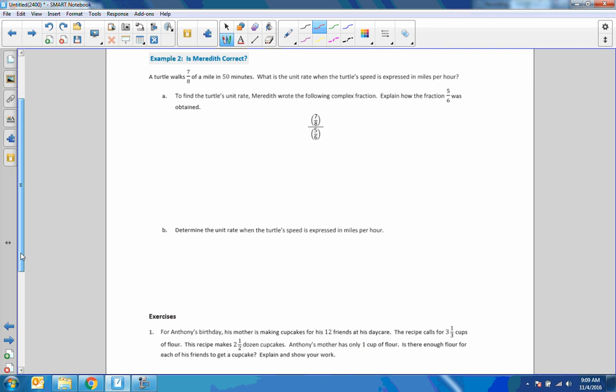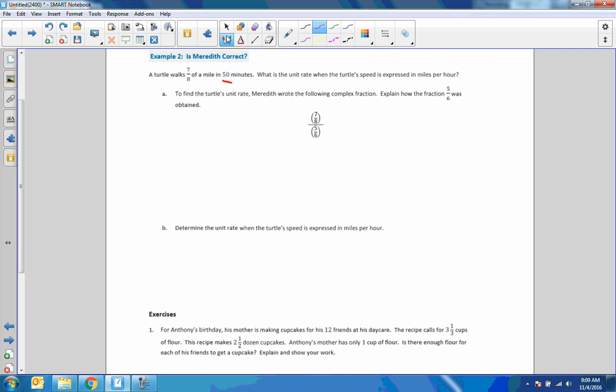Number two. A turtle walks 7 eighths of a mile in 50 minutes. What is the unit rate when the turtle's speed is expressed in miles per hour? We find the turtle's rate. Meredith wrote the following complex fraction. Explain how the fraction 5-6 was. So they want to know how we got 5-6. Where did that come from? That is the question. We know the turtle ran 50 minutes. Or 7 eighths of a mile in 50 minutes. So here's the 7 eighths. But where that came from is 50 minutes out of 60 minutes in an hour. And the zeros cancel, dividing both by 10. So therefore, 5-6 is 5-6 of an hour, which is 50 minutes. That's how the fraction goes. By reducing 50 over 60.